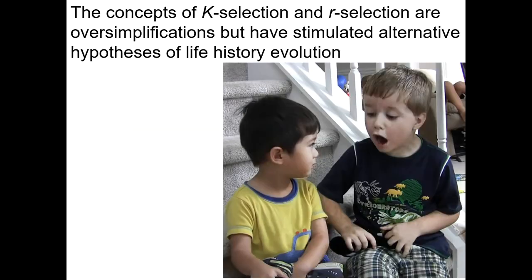One thing to remember is that these are oversimplifications, but they do help us understand the different evolutionary traits that different species have — like the difference between whales and mosquitoes. Just remember that they are an oversimplification.